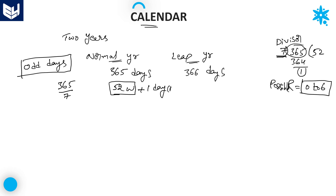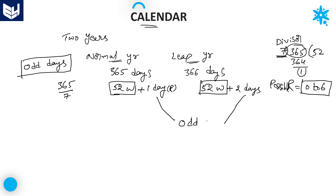That 1 day extra is the remainder left over after dividing 365 by 7. Similarly, 366 days for a leap year is 52 complete weeks plus 2 days extra. These extra days are called odd days. Without knowing the concept of odd days, it is not possible to get the answer in the calendar topic.